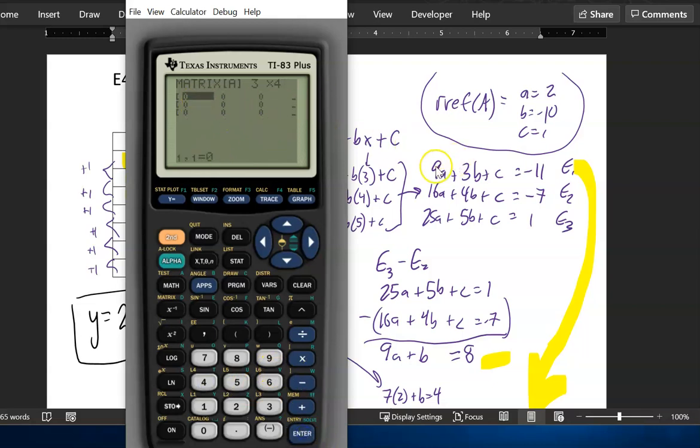And then now I can just enter in the numbers. So 9, 3, 1, negative 11, 16, 4, 1, negative 7, 25, 5, 1, 1.